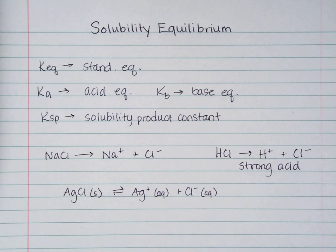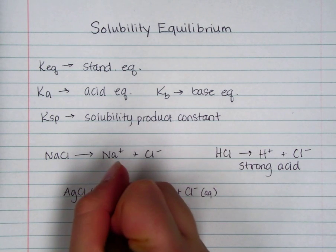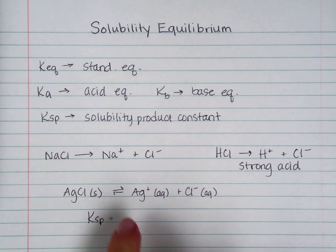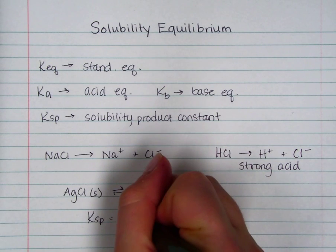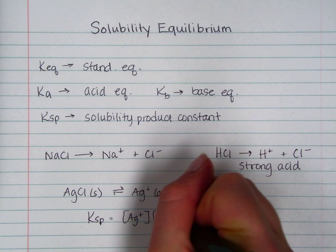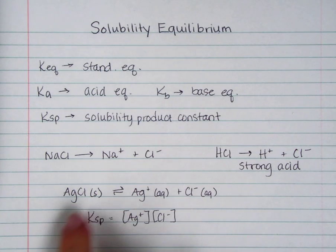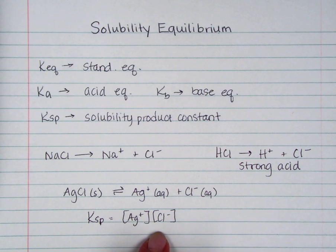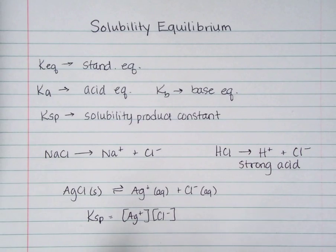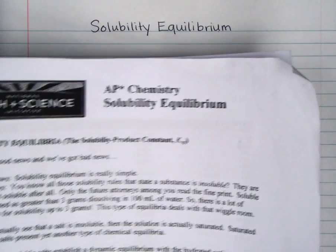And if I were to write a KSP for this using my KSP rules, I know I do products, so Ag+ times Cl- over reactants. But this is a solid, remember. So when you're writing your KSPs, they are never going to have a denominator. It's always just the numerator, just the products, because the denominator or the reactant is always a solid.